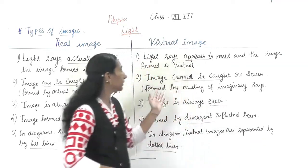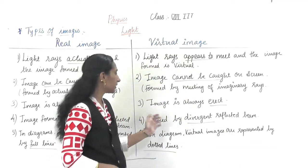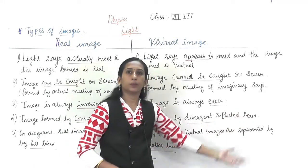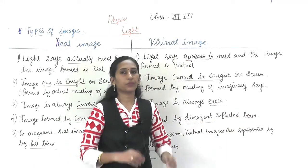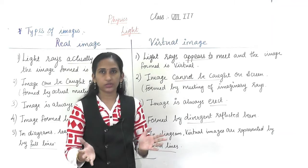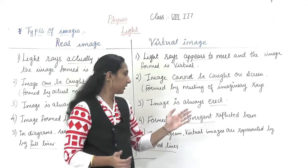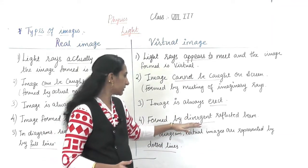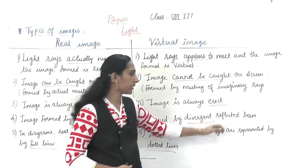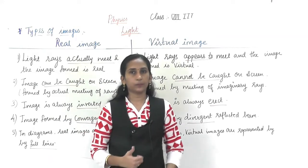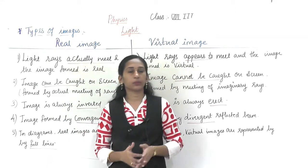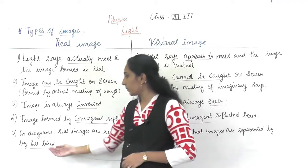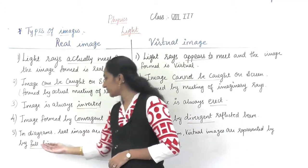A virtual image is formed by a divergent reflected beam — the beam diverges from one point and the image is formed from these diverged reflected beams.